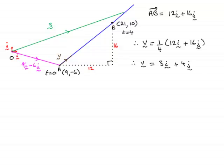So, we can write that in that therefore S is equal to 9I minus 6J plus T lots of the velocity vector V. And the velocity vector then is 3I plus 4J.